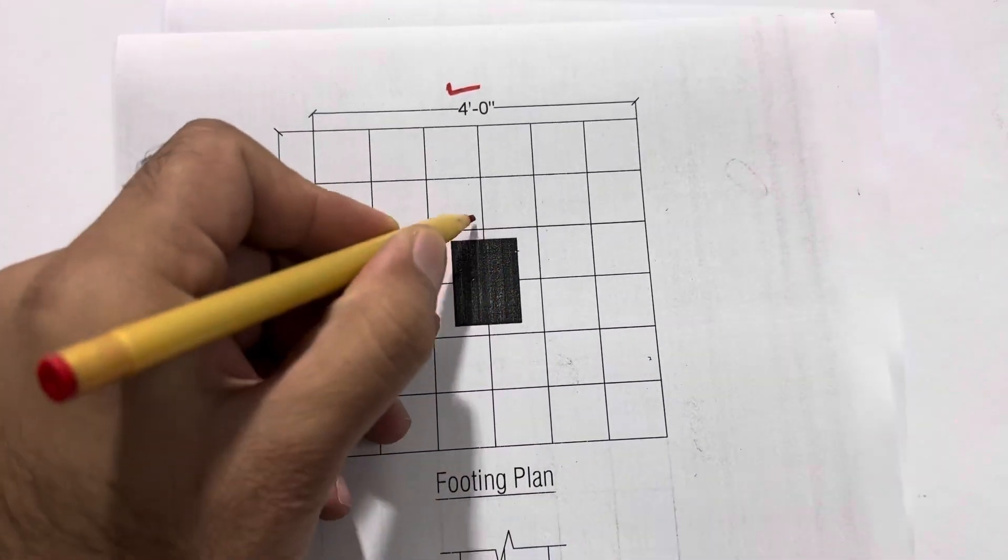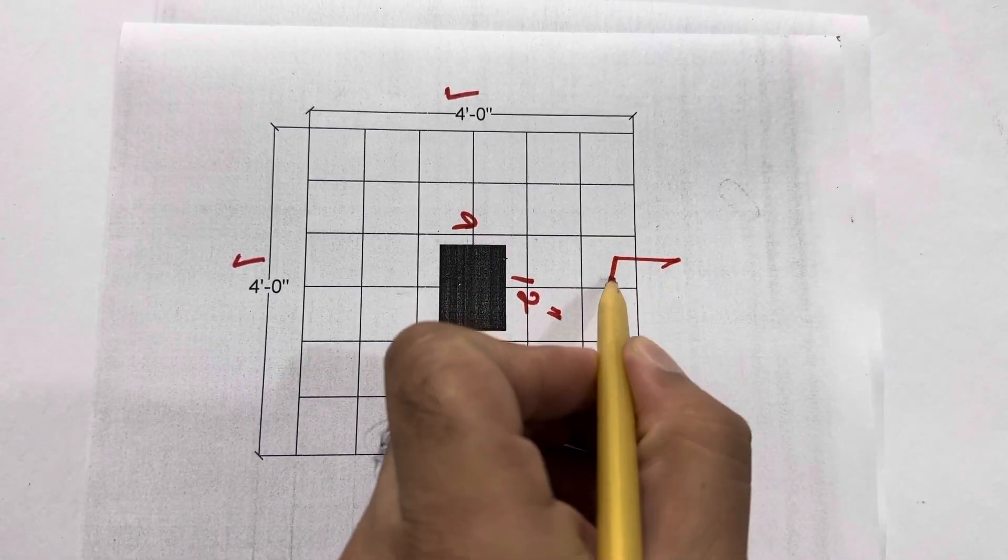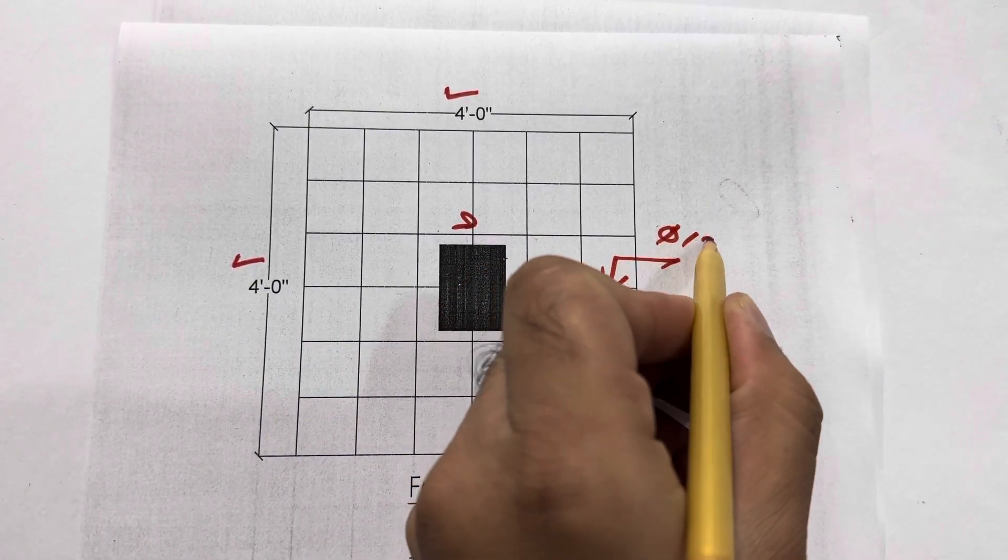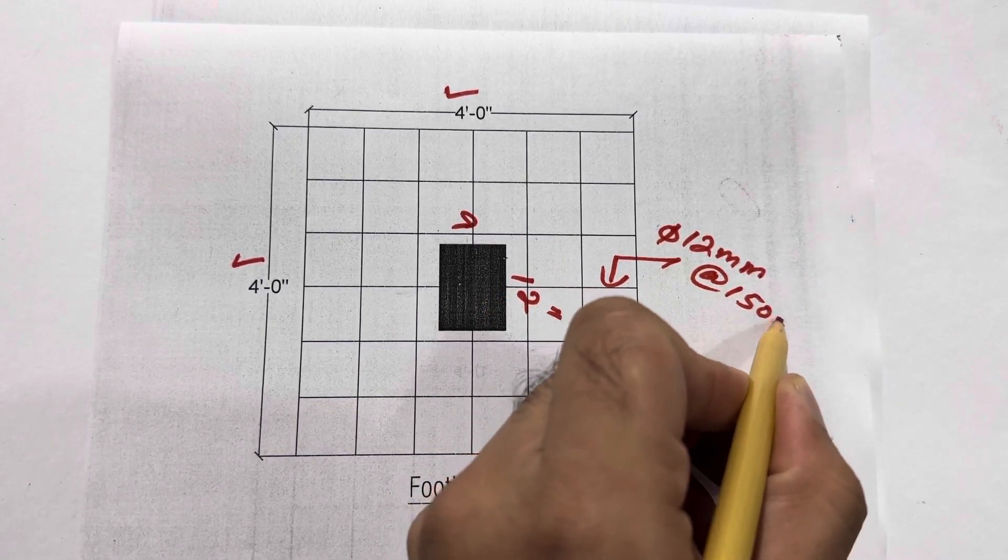Inside, the column size is 9 inches by 12 inches. You can see main bars and distribution bars diameter is 12 millimeter with the spacing of 150 millimeter center to center, or you can say 6 inches center to center.